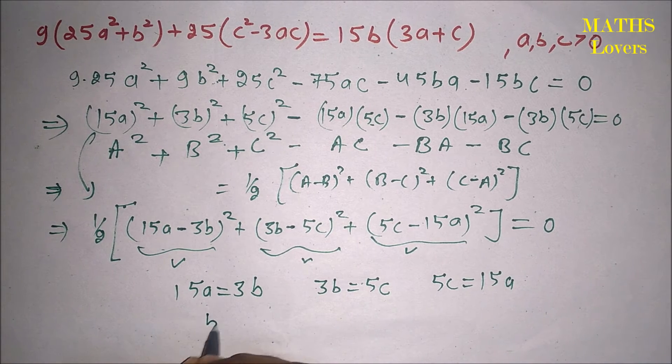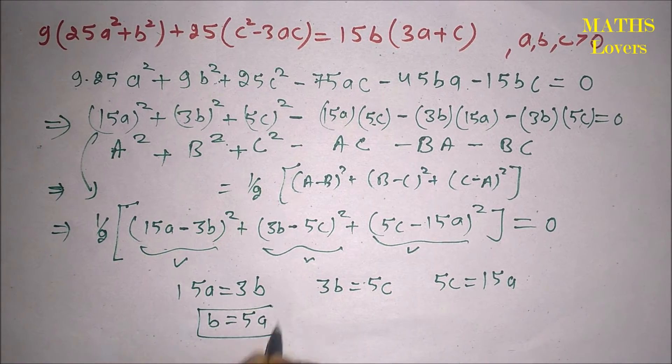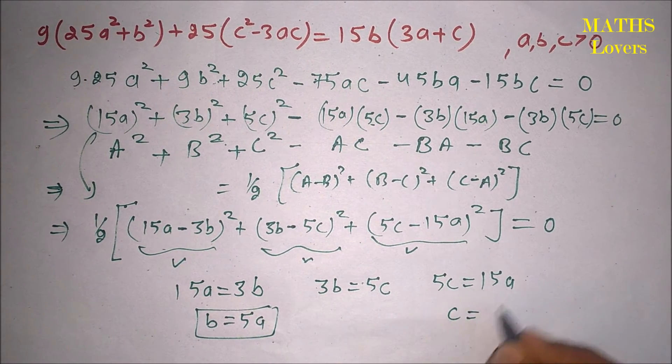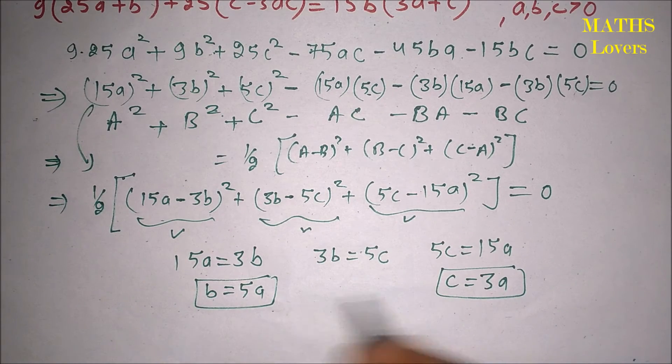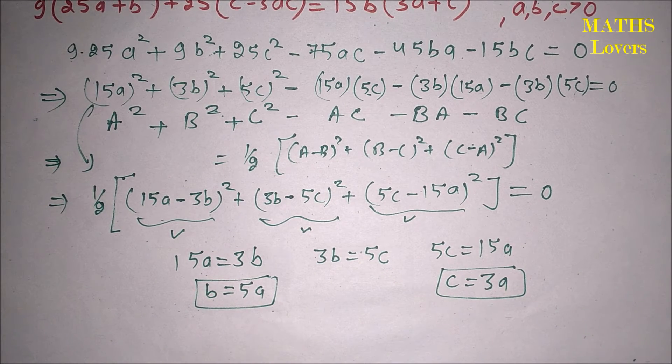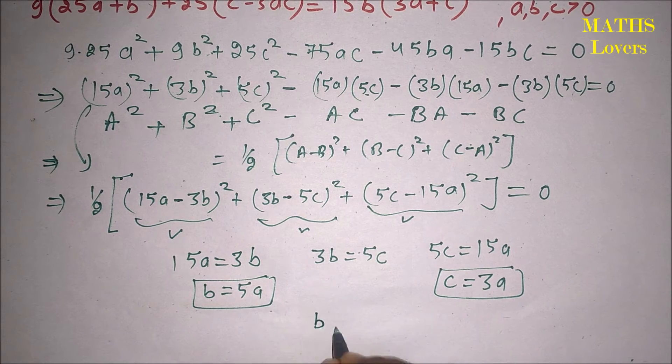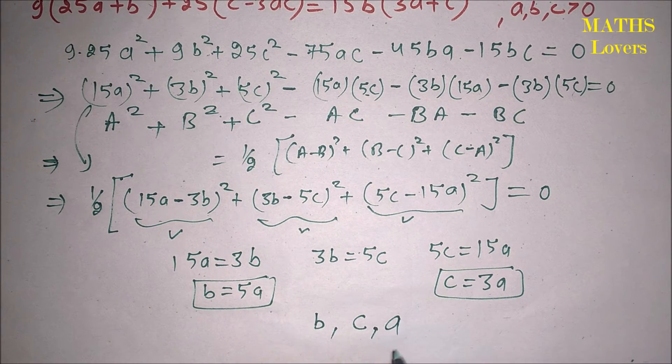So we get b equal to 5a and c equal to 3a. If we write all terms in terms of a, then we can write it. It is asking about b, c, a, so b is our 5a, this is our 3a, and a is a